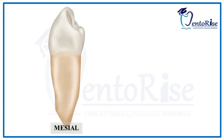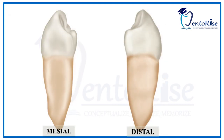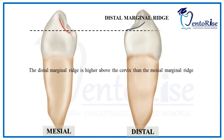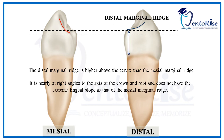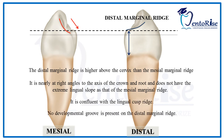Now let's start with the distal aspect. The first heading is the distal marginal ridge. Comparing the distal marginal ridge with the mesial marginal ridge: firstly, the distal marginal ridge is higher above the cervix than the mesial marginal ridge. Secondly, it is at right angles to the axis of the crown and root, whereas the mesial marginal ridge has an extreme lingual inclination. Thirdly, the distal marginal ridge is confluent with the lingual cusp ridge. Lastly, no developmental groove is present on the distal marginal ridge, whereas a mesolingual developmental groove is present on the mesial marginal ridge.